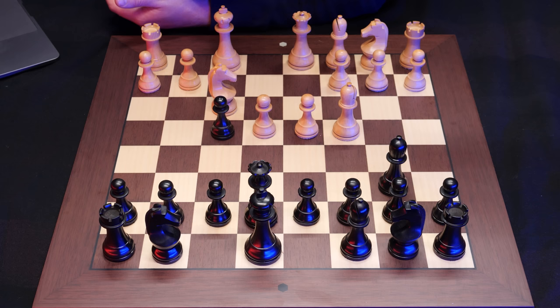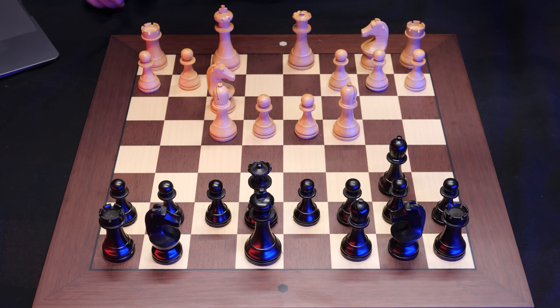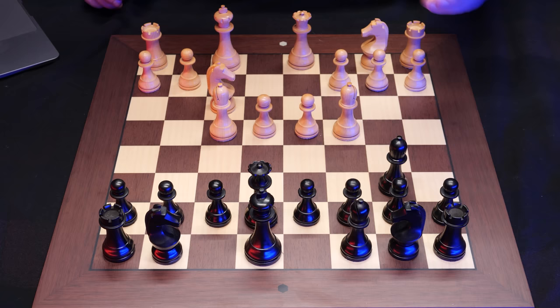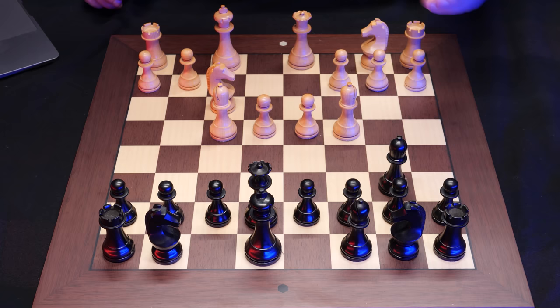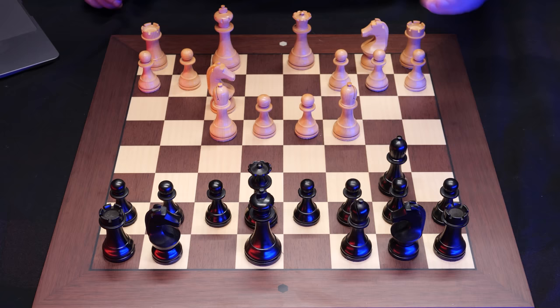So we just recapture this pawn. Bishop takes F4. We have a couple of strong bishops, we have regained our pawn, we have an extremely nice position in all ways actually, except our king safety is maybe a little dubious. But these two pawns, these bishops, this queen, this knight, just beautiful.